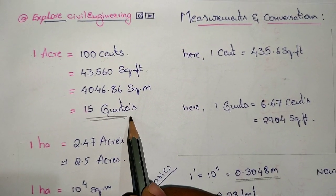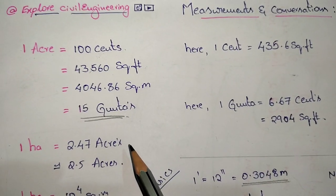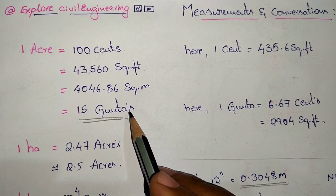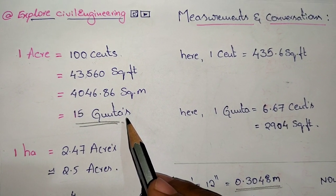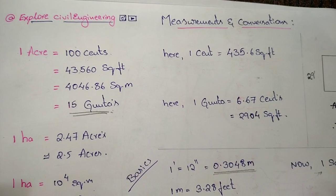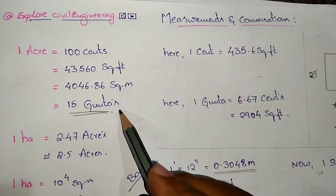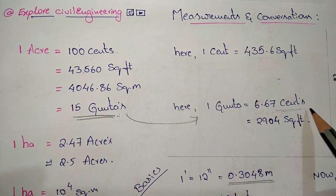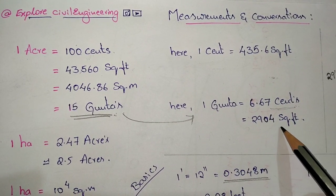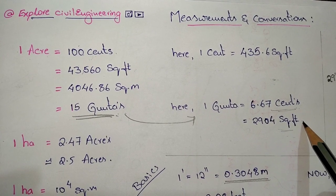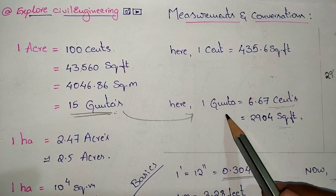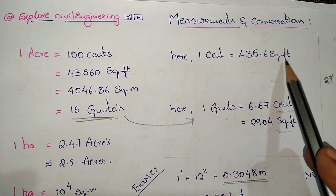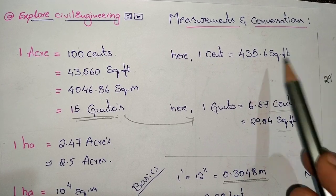Gunda is prominently used in north and south India with different conversions. I will discuss the south Indian measurement system here; the north Indian measurement system is given in the description. As per the south Indian measurement system, one acre equals 15 gundas, and one gunda equals 6.67 cents, which equals 2904 square feet.